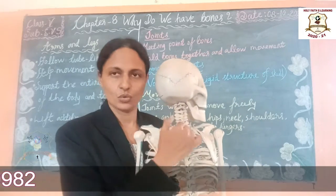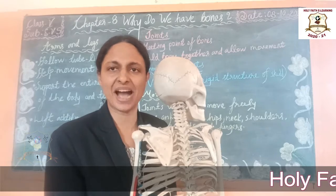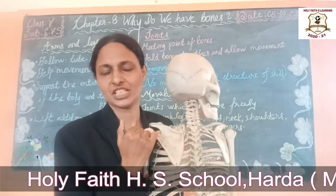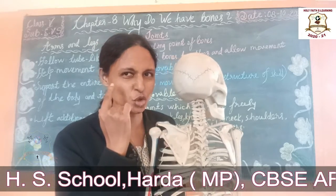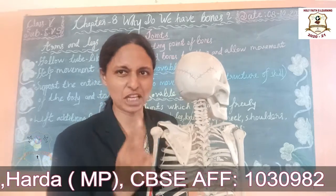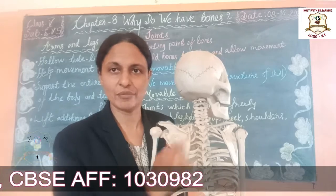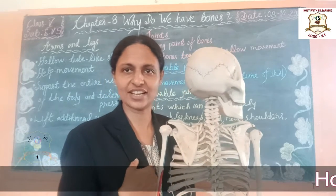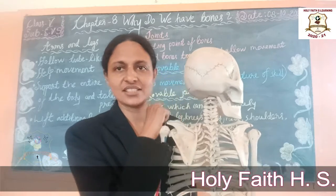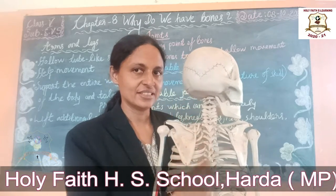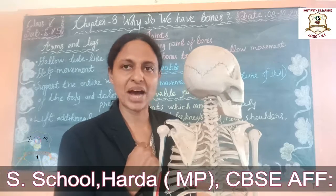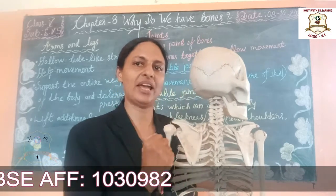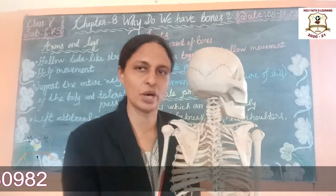Now, the vertebral column or spinal column — this protects the spinal cord. The spinal cord is a tubular, thin part of the nerve — very, very important. It is attached to many nerves. So, the brain is the commander of the body and the spinal cord is the pathway of messages, from the body to the brain and from the brain to the body.